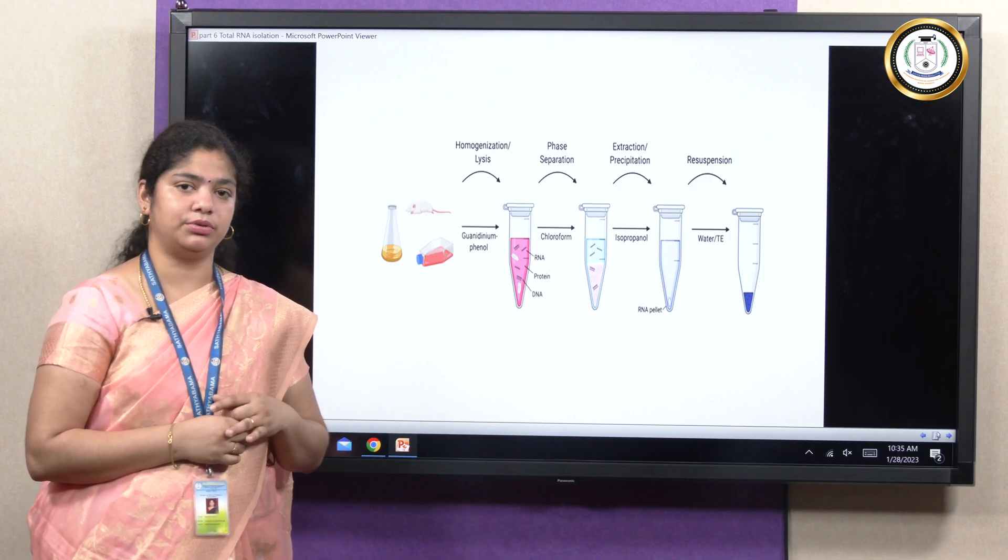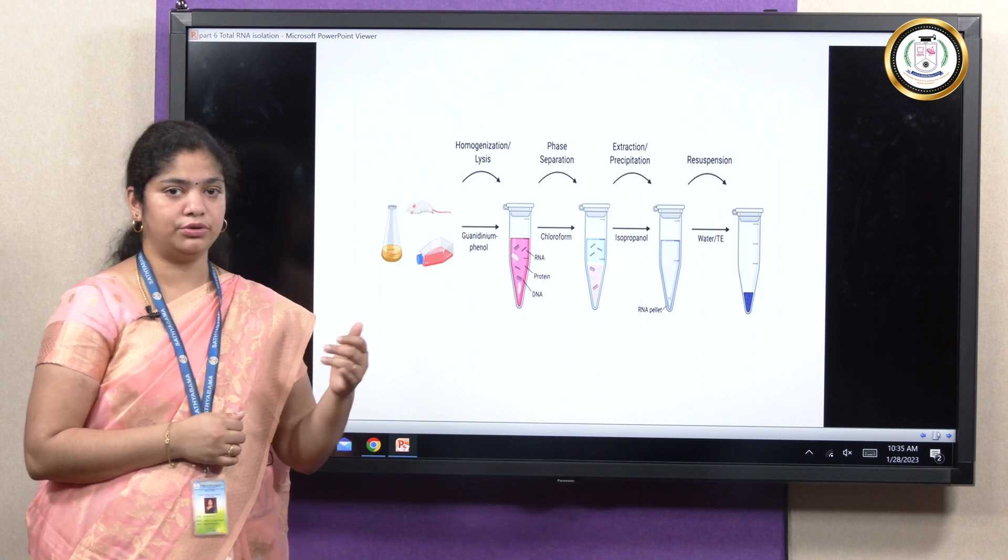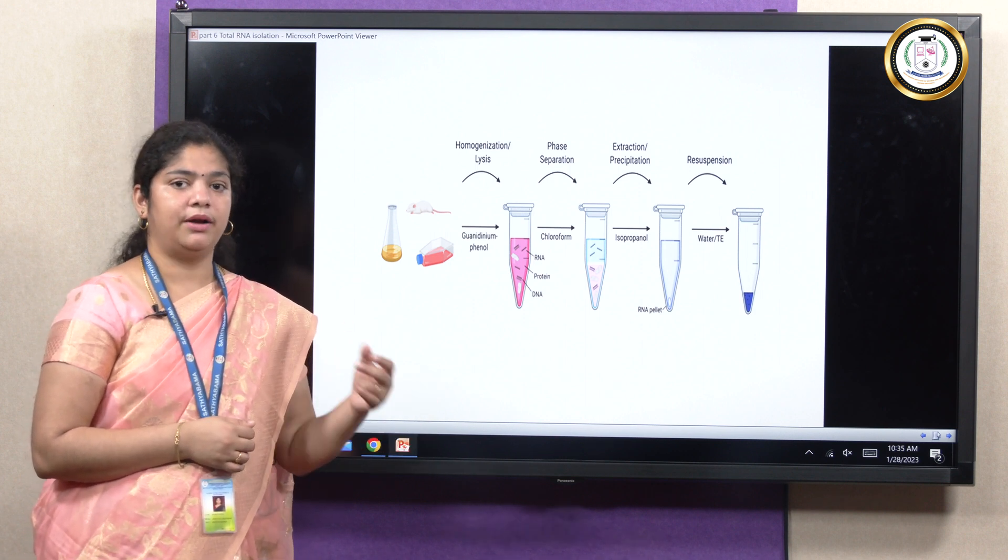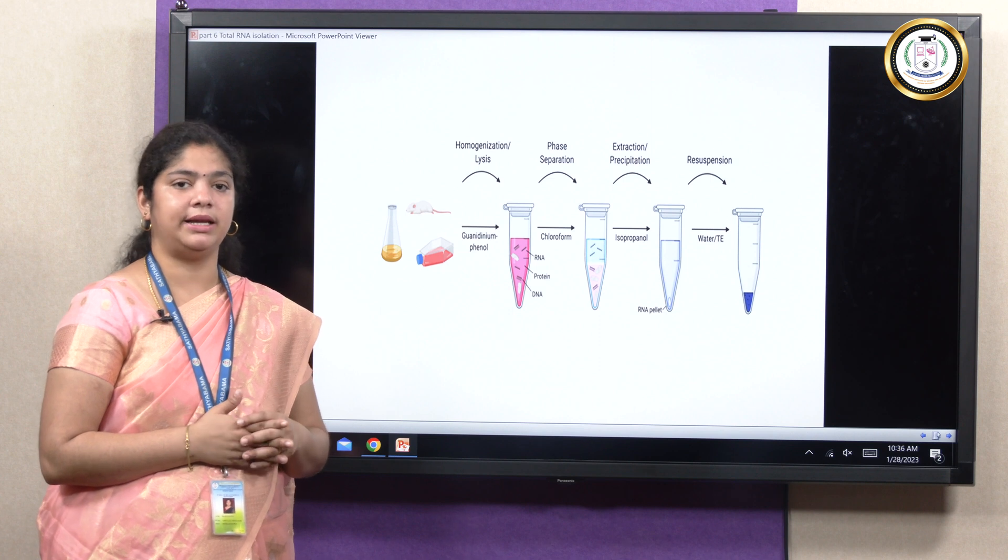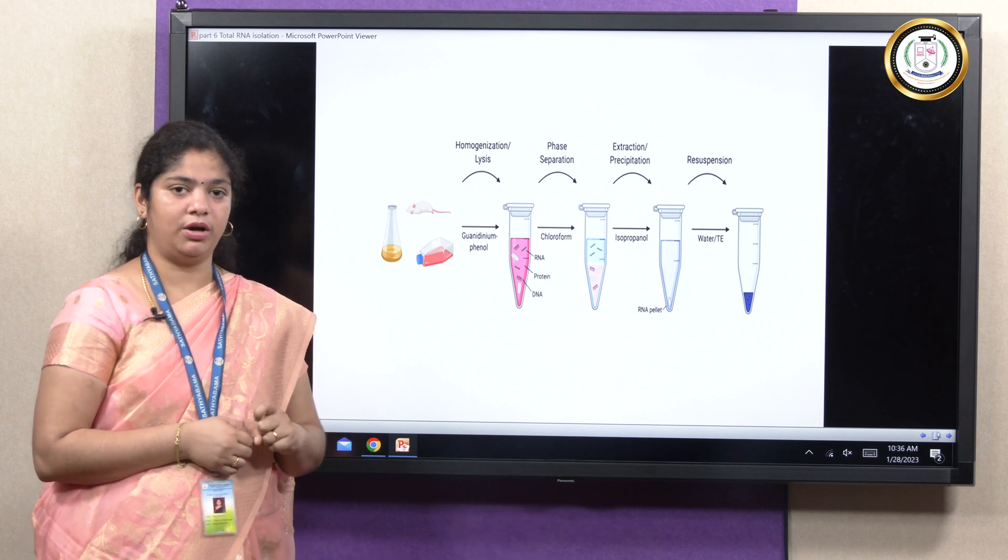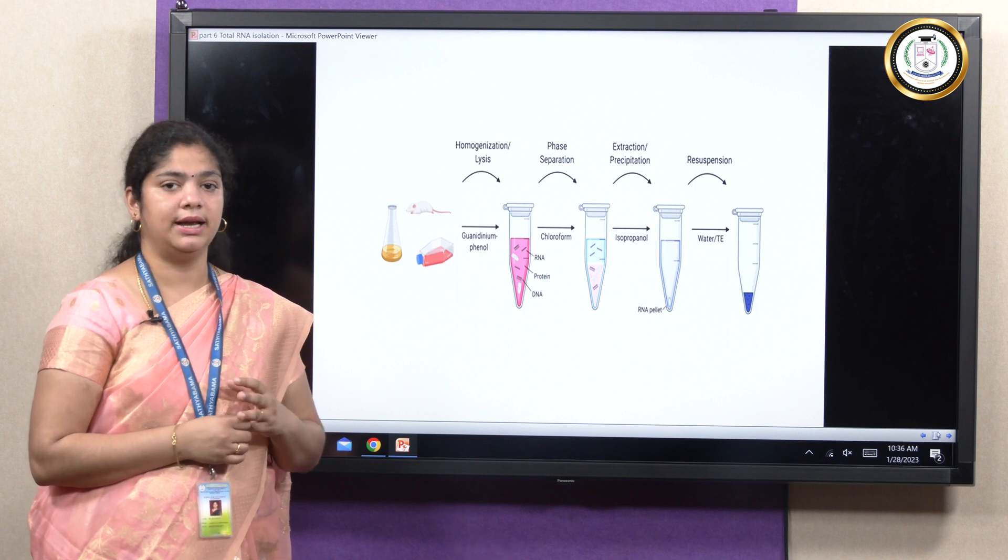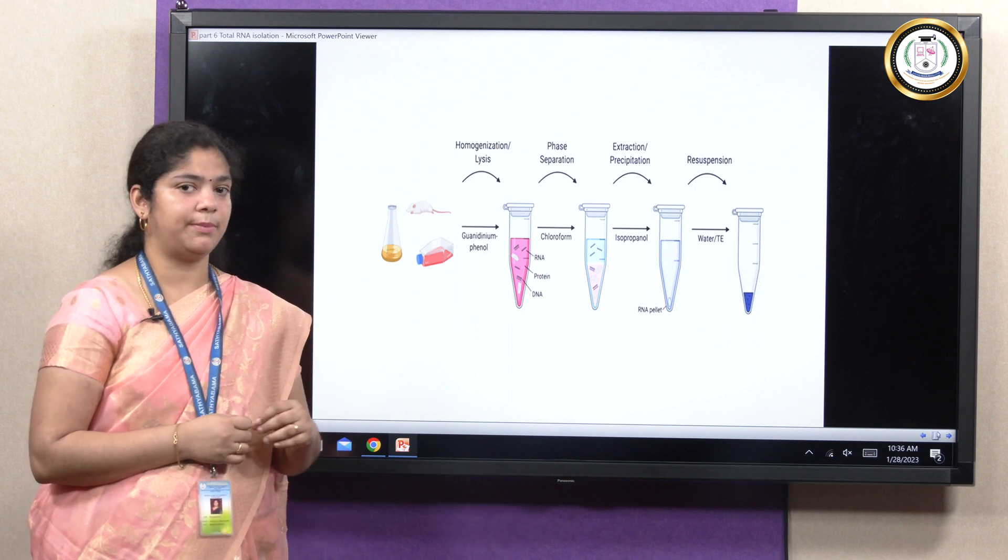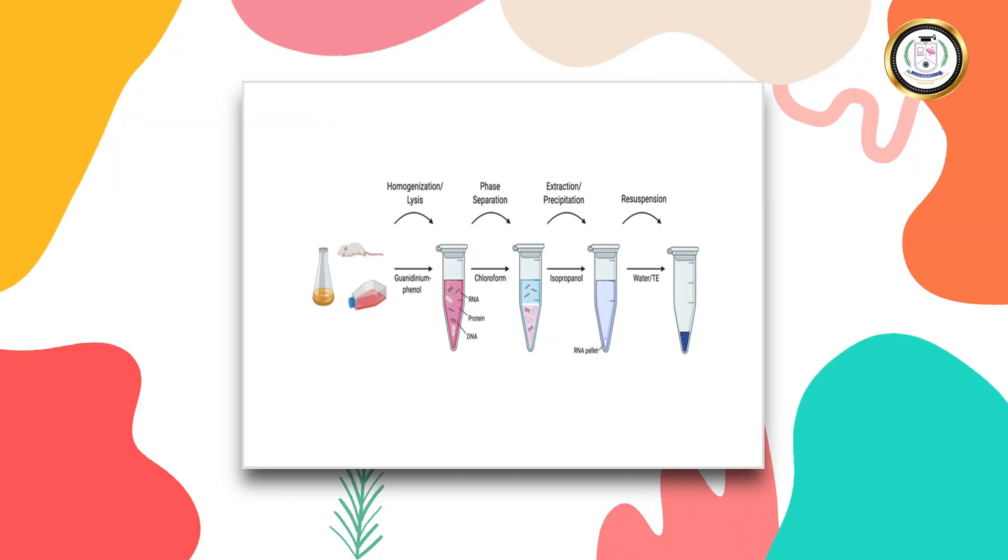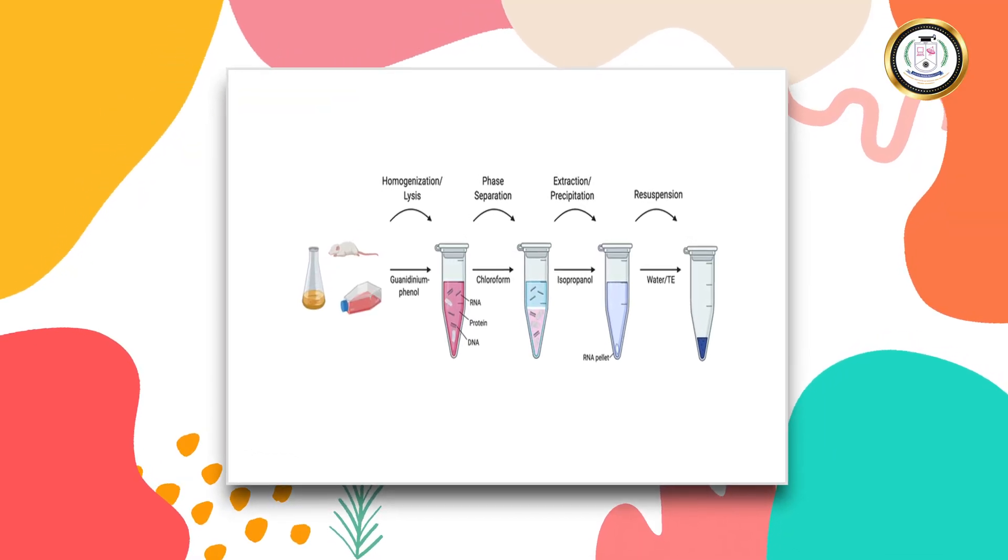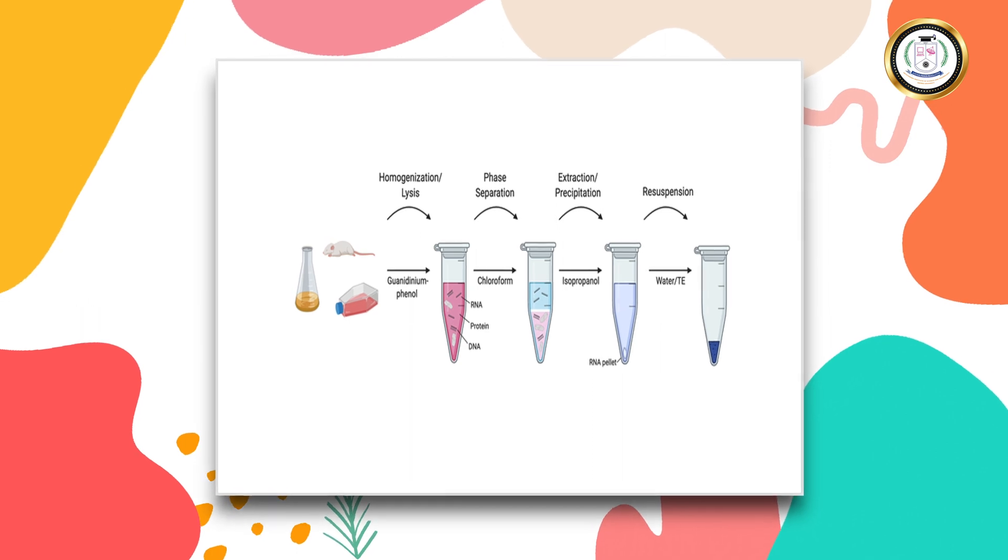And every time when we use, we have to freeze, so we have to do aliquots of this RNA sample. And once the aliquots are kept in minus 80, each aliquot can be taken for ensuring that there is no loss of RNA, there is no degradation, and there is use of all the samples at a particular experiment. So here we have any source of sample and then it can go to the homogenization.